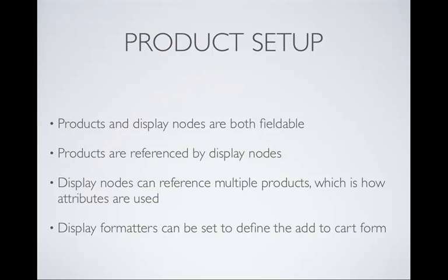Question from audience: Is it better to go one product to many display nodes, or the other way? Generally it's one display node to many products, and that's how we handle attributes. So if you had a green shirt, a blue shirt, and a red shirt, those would all be different products but share the same display node. Maybe red dye is really expensive, so the red shirts cost more. You can set different prices for different products, and the field formatter brings all that in. When you select from a dropdown, the image will change, the description will change, the title will change, the price will change - any field you set there will change.